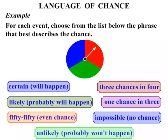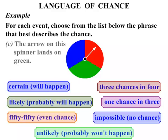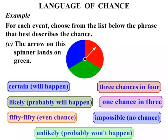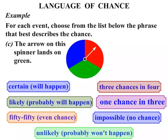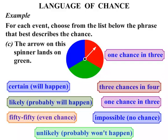Now we've got a spinner here and there are three colors it might land on — it could land on red, green, or blue, and it looks like they're all equally likely. So if I ask you what's the chance that the arrow on the spinner lands on green, well it's got one chance in three.